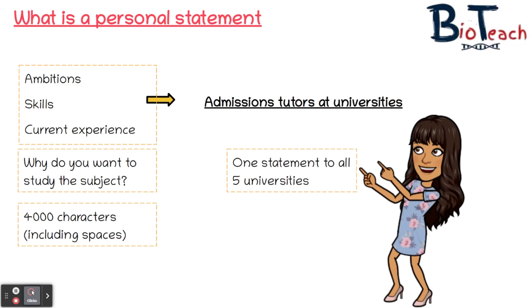Some students will apply for the same course at five different universities, so those students can mention the course by name if they wish. But if your course choices are fairly similar — let's say pharmaceutical science and pharmacy — you'd be better off talking about the subject areas in general and writing about common themes instead.